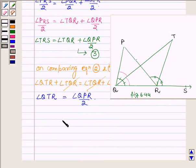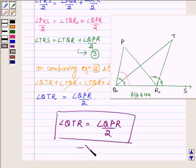Thus we have proved that angle QTR is equal to angle QPR upon 2. So this completes the solution. Hope you enjoyed it. Take care and bye for now.